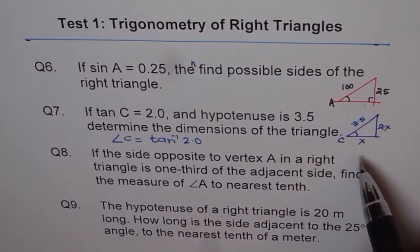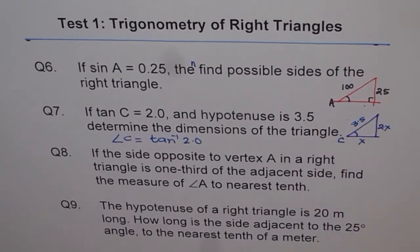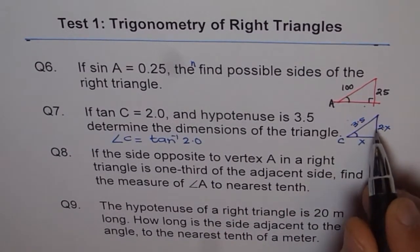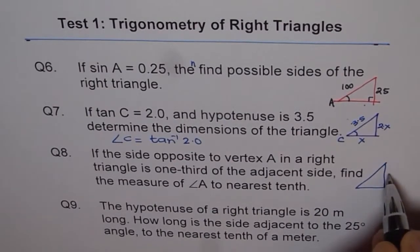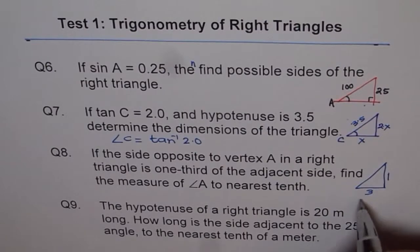If the side opposite to vertex A in a right triangle is one-third of the adjacent side, find the measure of angle A. Let's draw a triangle. If the side opposite is one-third, that means this is 1 and this is 3. This is easy to represent—avoid fractions.